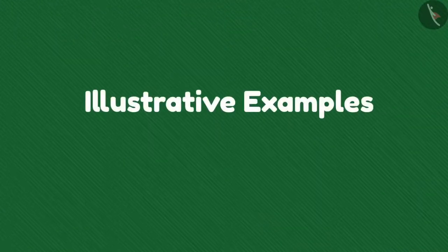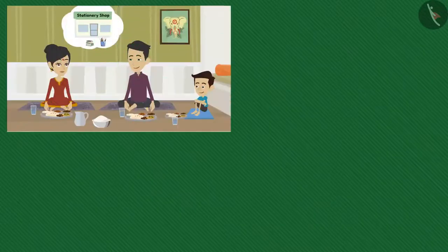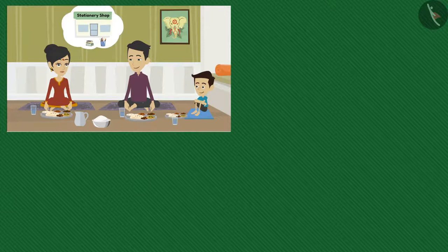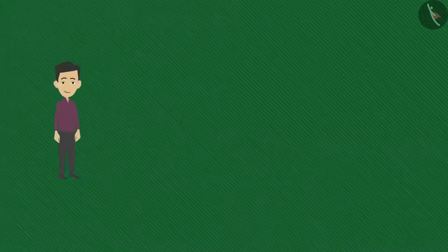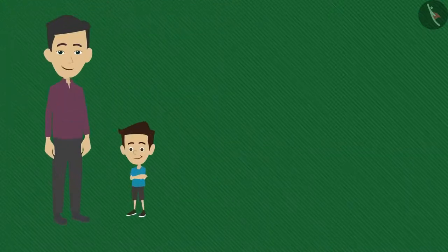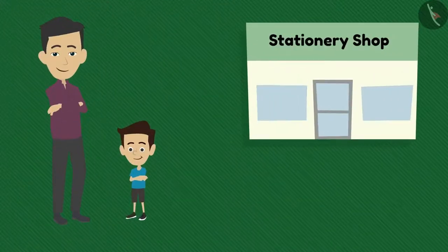Hello friends, welcome to this video. In the previous video we learned how Ramu and his family were thinking about taking a loan from the bank to start a new venture. Today we will see how Ramu and Sham are purchasing things for their shop.